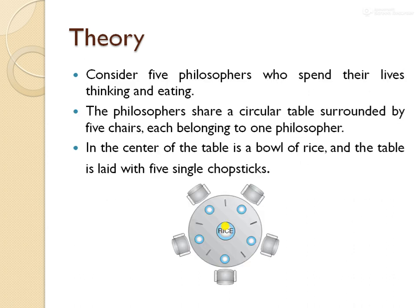What is exactly the Dining Philosopher's problem? We consider 5 philosophers who spend their lives thinking and eating — two states: thinking and eating. They share a circular table with 5 chairs, a bowl of rice at the center, and 5 single chopsticks laid on the table. We can consider the chopsticks as forks — both terms are equivalent. In this theory I'll use chopsticks, but in the program I use fork.